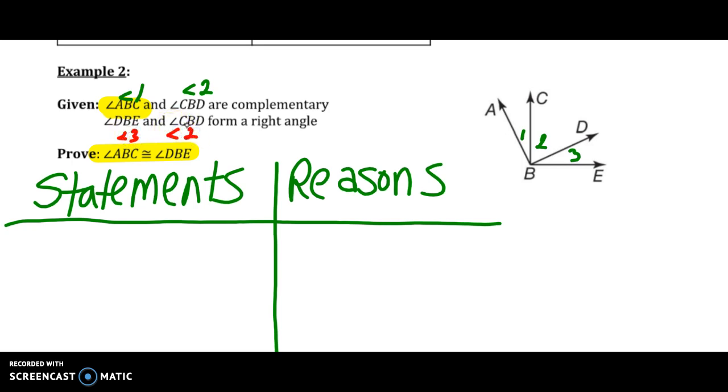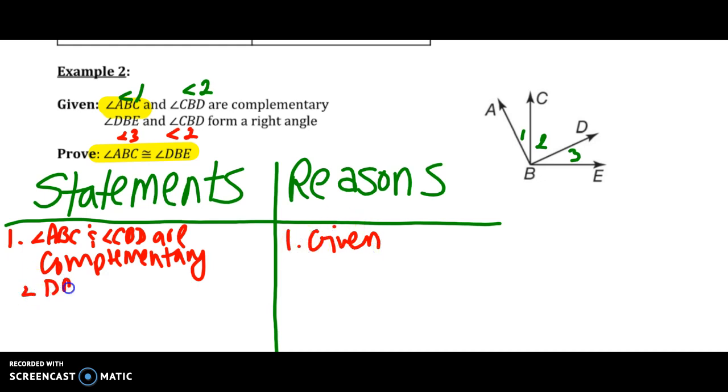We're going to write our given information. Angle ABC and angle CBD are complementary - we know this is given. And angle DBE and angle CBD form a right angle.